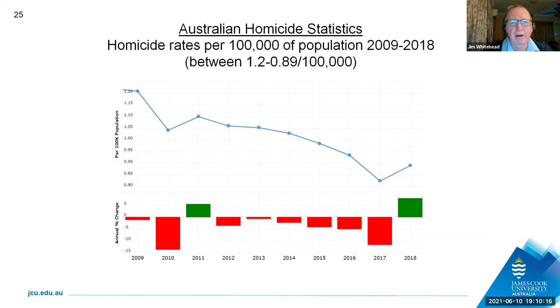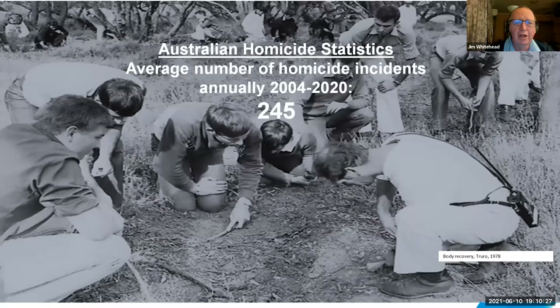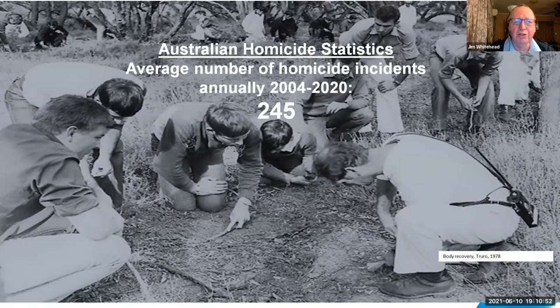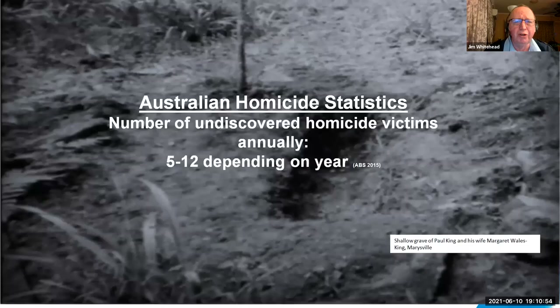We have about 245 homicides a year annually in Australia. Queensland has about 54, give or take one or two. That's not a huge number when you look at other countries — there are cities in the United States that have more homicides annually than we do as an entire country. But the most interesting thing about the homicide stats from my point of view is that there are between 5 and 12 victims, depending on the year, who aren't actually discovered at the scene where they are murdered. This is where my interest comes in — to find those victims.